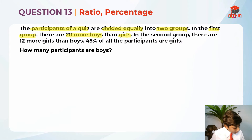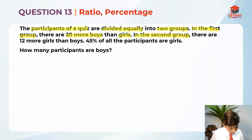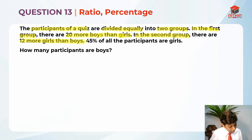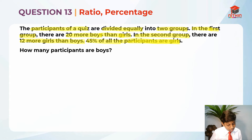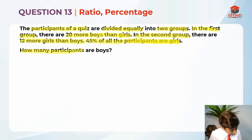In the second group, there are 12 more girls than boys. They are telling us 45% of all the participants are girls, and they are asking us how many participants are boys.